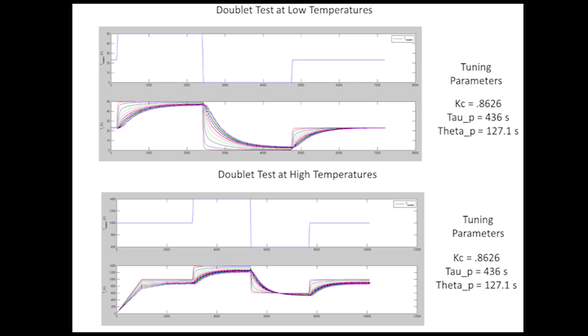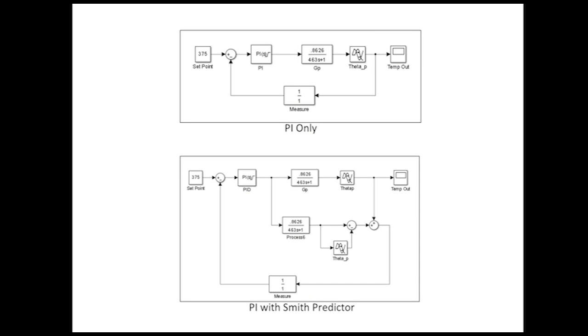Our first attempt was with a PID controller, and the closest we could get with a PID controller was at about 1500 seconds, which is nowhere near our two minutes. So what we decided to do instead is go with a PID controller with a Smith predictor.